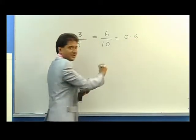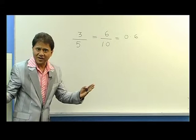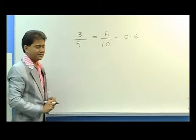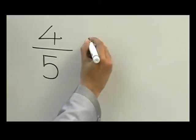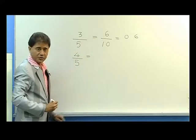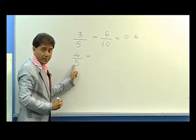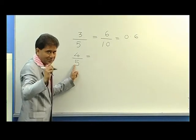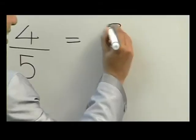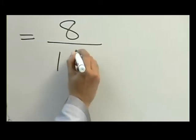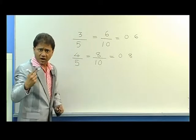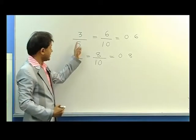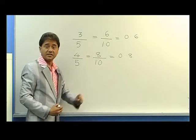And six over ten is nothing but 0.6. Wasn't that very fast? Let me take another example: four over five. As I mentioned to you, you have five, how do you make it ten? Times it by two, correct. So you get eight over ten which is nothing but 0.8.